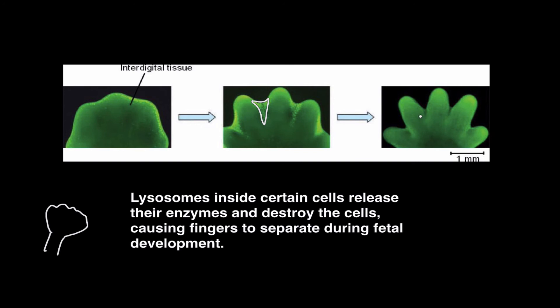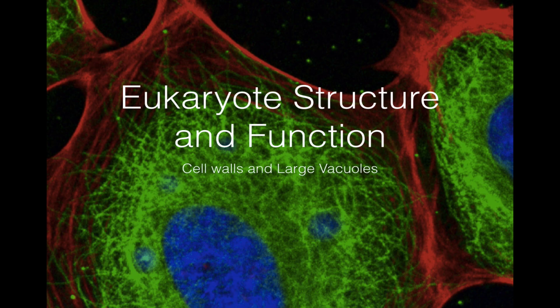As that happens, the fingers actually emerge from what once was a continuous, webbed paddle shape. This is a good example of how programmed cell death — or apoptosis, if you take AP Biology — works: lysosomes in the cells in these spaces are rupturing and causing individual cells to die, and as these cells die, the fingers separate. I always thought that was kind of cool. Thanks for listening, and we'll stop there.